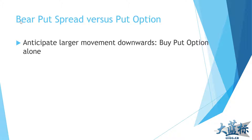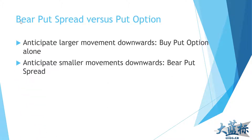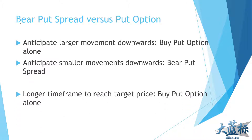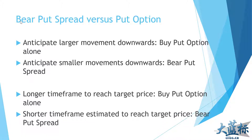Comparing to just buying a put option outright: if I anticipate a larger downward movement, I buy the put option alone. But downward movements are not easy to predict and are typically smaller, since these are sizable public companies that don't go down quickly. That's why the bear put spread is a very popular strategy when forecasting downward pressure. If you anticipate a larger movement with a longer time period, buy a basic put option. But for shorter time frames where time decay works against you, a bear put spread minimizes that effect and is quite useful.